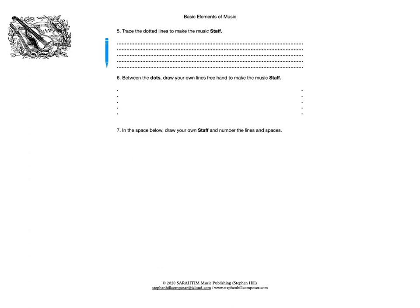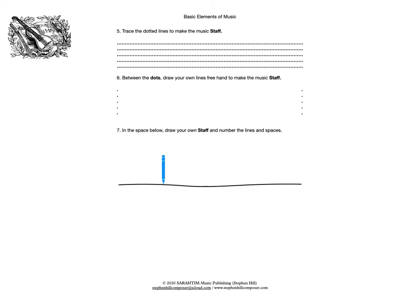On the second side of the worksheet, you're going to learn to draw your five-line staff freehand. Number five has lines for you to trace. Number six gives you just a starting and ending point — draw as straight a line as you can. Number seven, you're going to draw your five lines freehand with no guides, and number them from the bottom up: the first line is one, the top line is five, and the spaces are numbered one, two, three, four.